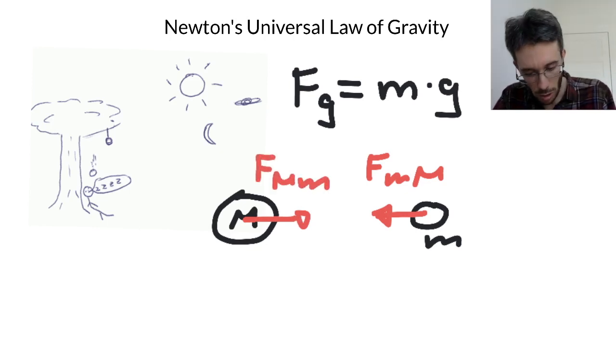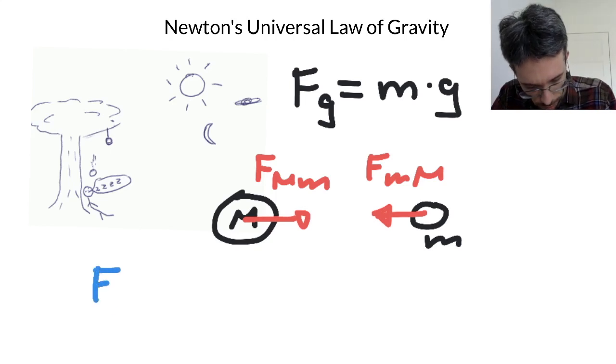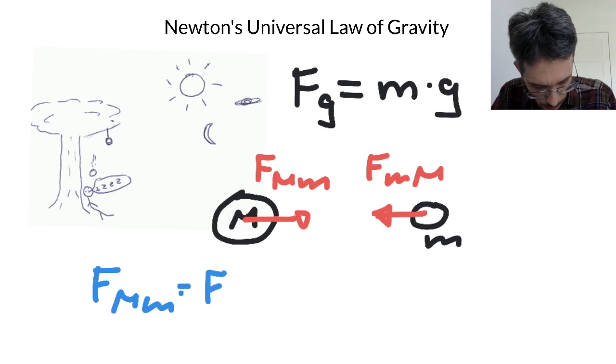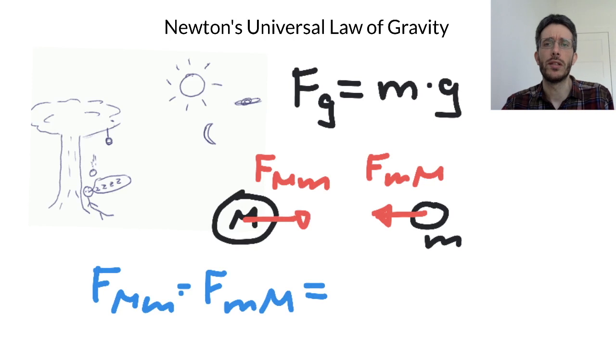We already know according to Newton's third law of motion that the two forces must be the same. But now the question is how do we calculate this? If I use Fg equals mg, which m do I use? The first or the second one? Which g do I use? It's a bit more complicated.